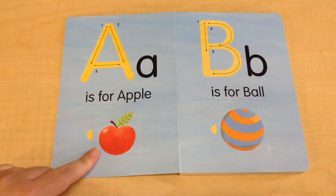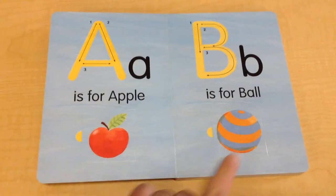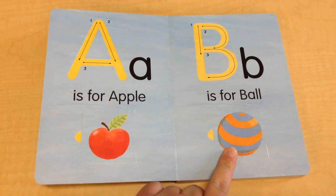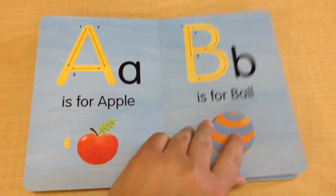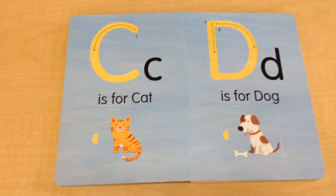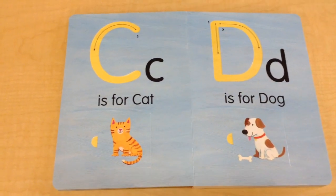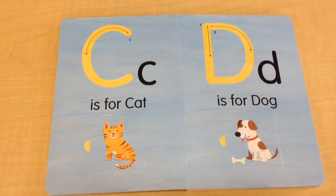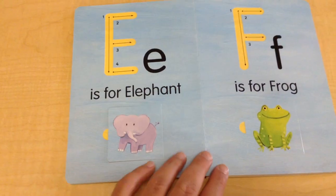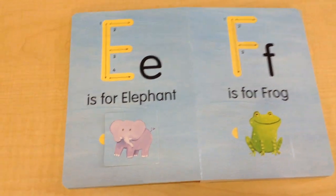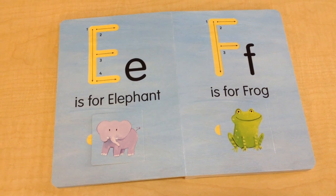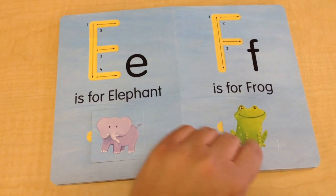A is for apple. B is for ball. C is for cat. D is for dog. E is for elephant. F is for frog.